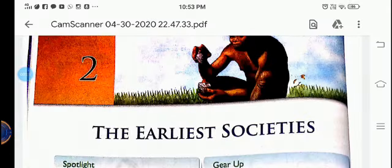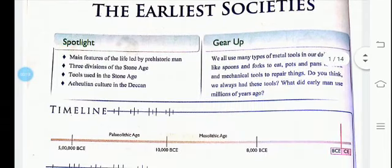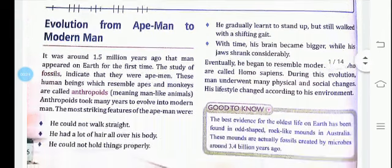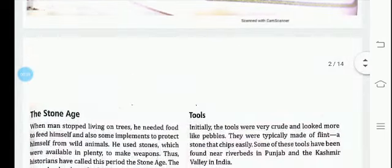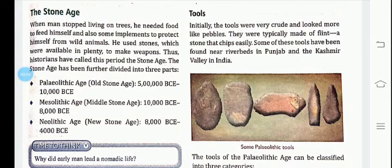Hello children, we will continue with our second lesson: the Earlier Societies. From this lesson we already came to know how the evolution from ape-man to modern man took place, and he appeared on Earth 1.5 million years ago. Now for today we will discuss about the Stone Age, when man stopped living on trees.